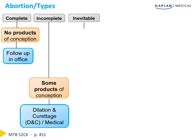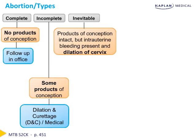Next is the inevitable abortion. With the inevitable abortion, products of conception are intact, but there is intrauterine bleeding present and the cervix is dilated. In this case, we again have the option of surgical management with a dilation and curettage or medical management to clear out the uterus.